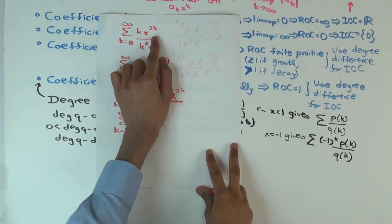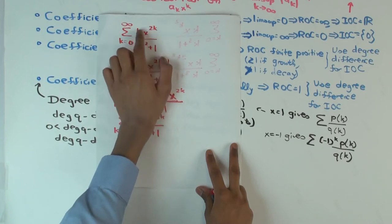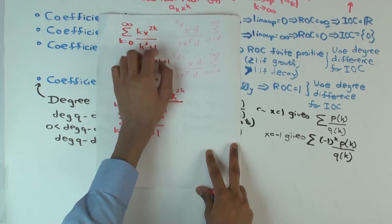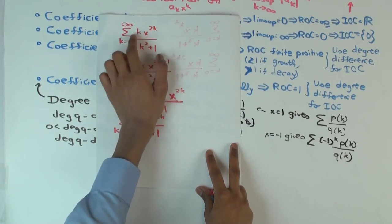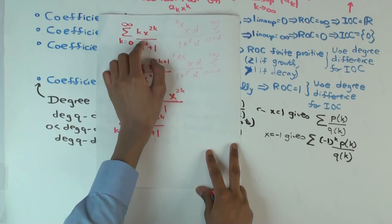So, what's the radius of convergence, first of all? One. Still one, because the exponent is 2k. This is a rational function in k, but it's also a rational function of 2k if you want. So the radius of convergence is still one. But for the interval of convergence, you now have to be a little more careful.